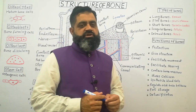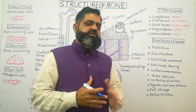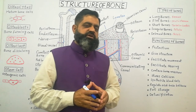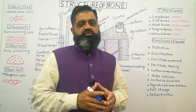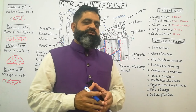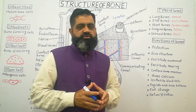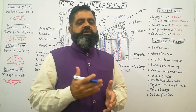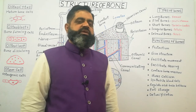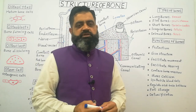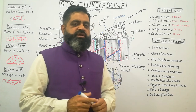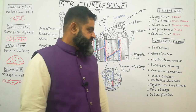Bones synthesize blood cells in a process known as hematopoiesis, which will be discussed in upcoming lectures. Many stem cells present in red bone marrow produce red blood cells, white blood cells, and megakaryocytes, which originate platelets. Approximately 2.5 billion platelets and red blood cells are produced every day, along with white blood cells that are added to the circulatory system.